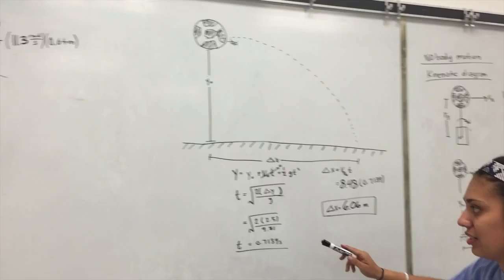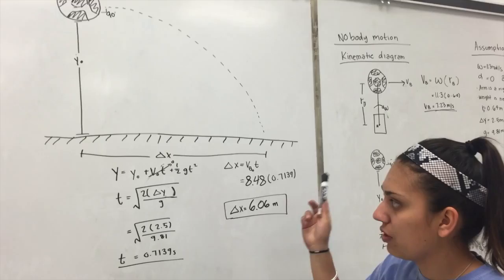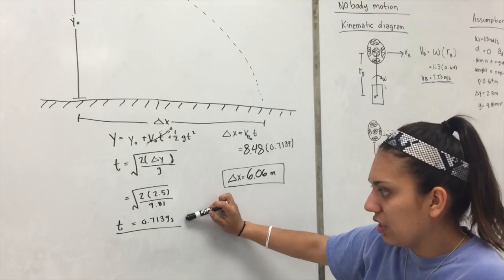We use that when we're solving for delta X, but we first need T for that. We use the same equation as before, but V naught times T is going to be zero, so you can neglect that. When you plug in the equations, you get that T equals 0.7139 seconds.